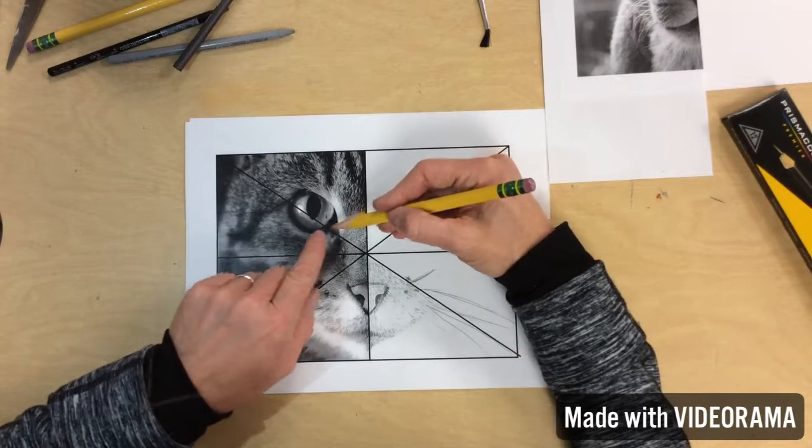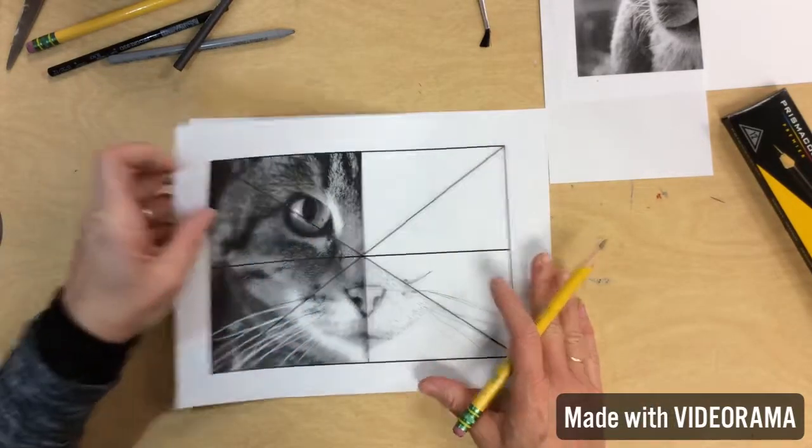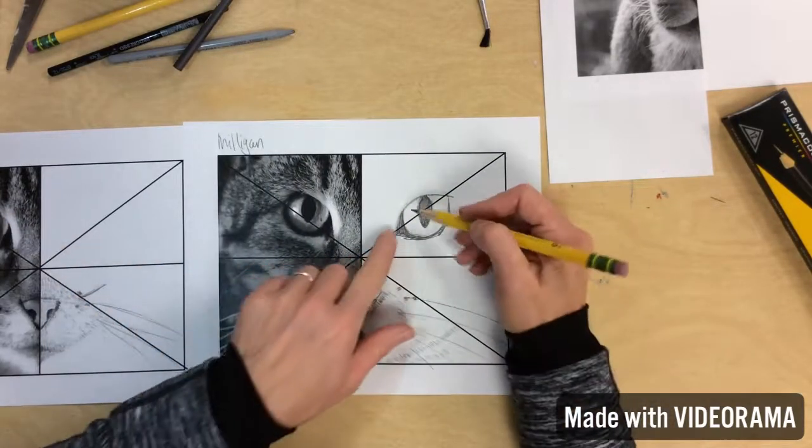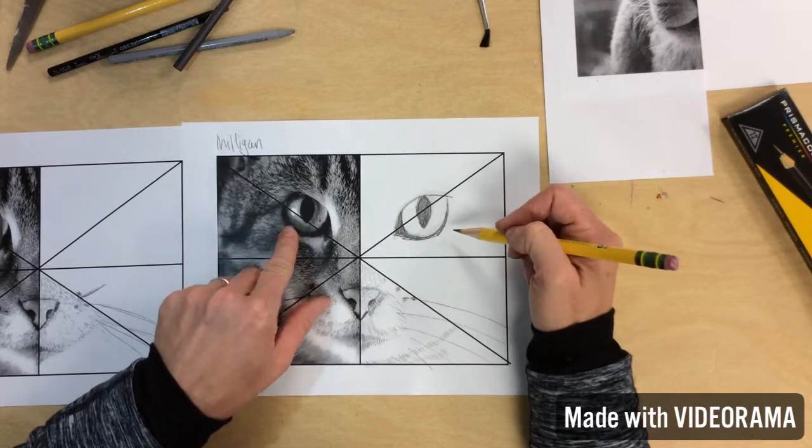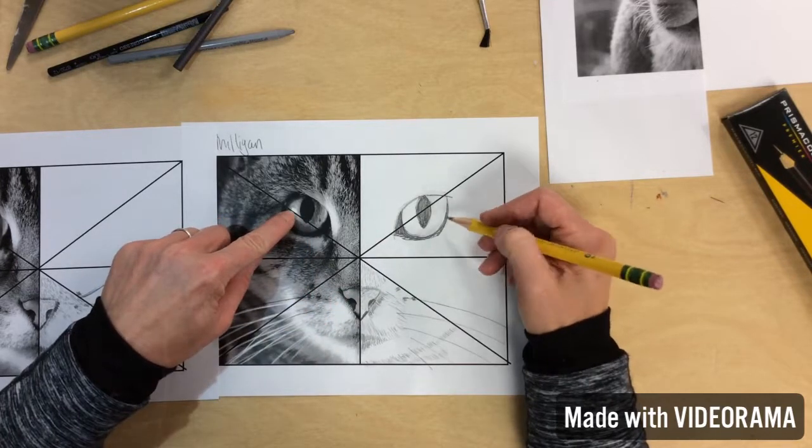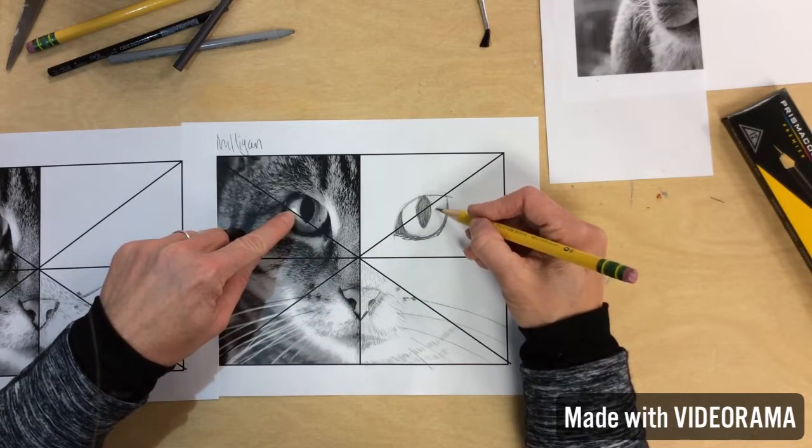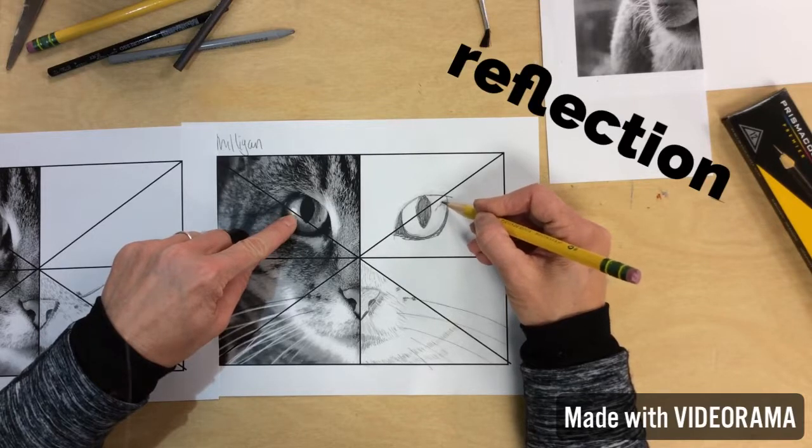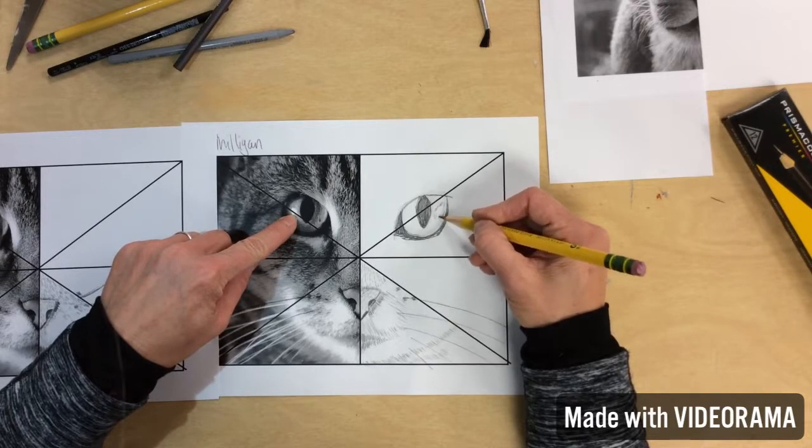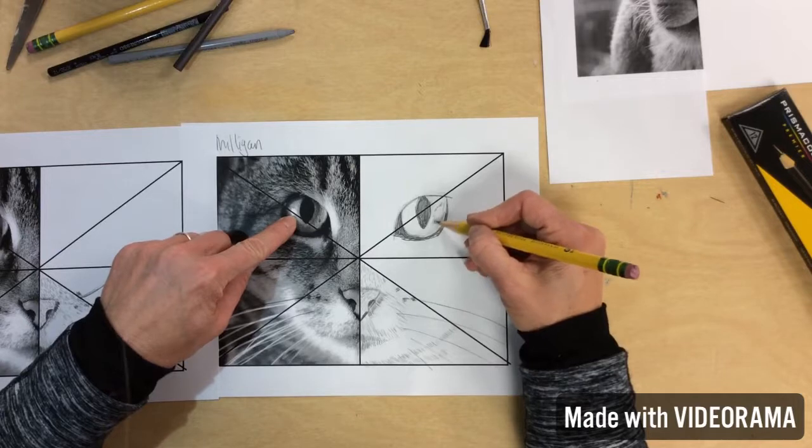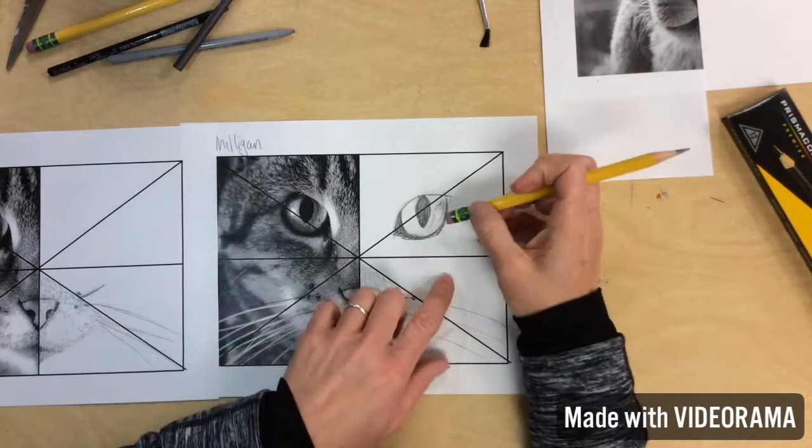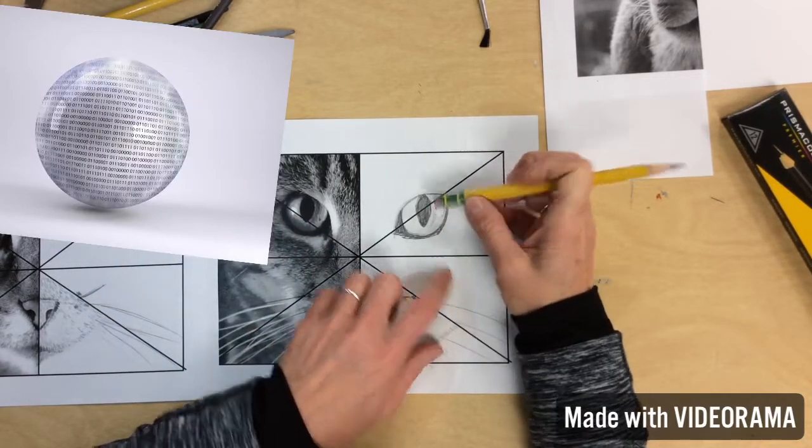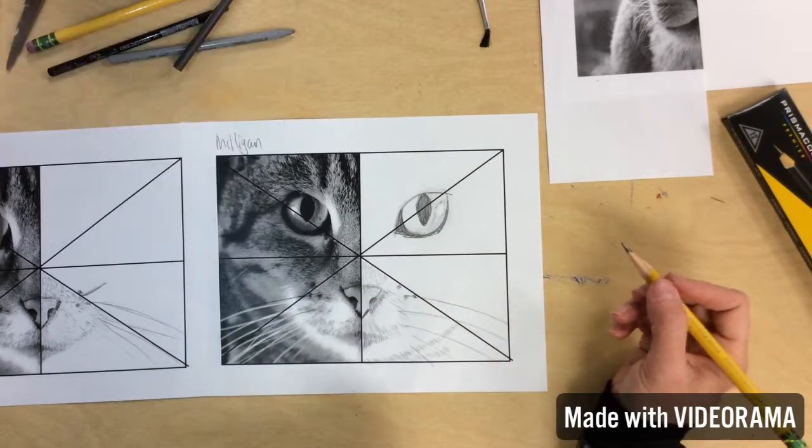But when I come into this eye and I started it on this other one, it took me a while to get this. And there's that reflection. So you're always going to have a reflection where the light enters. And maybe you would go around it, leave that blank. We've already drawn spheres. Come in and erase it. I like that.